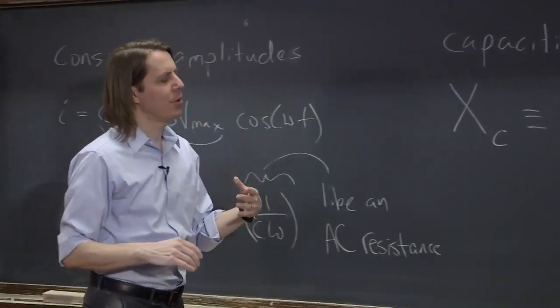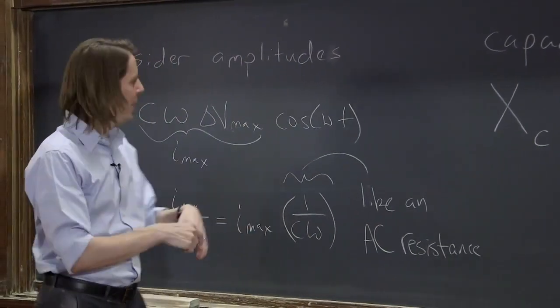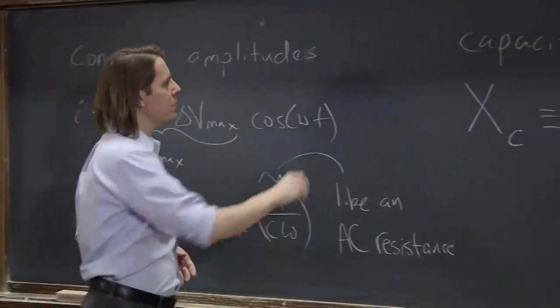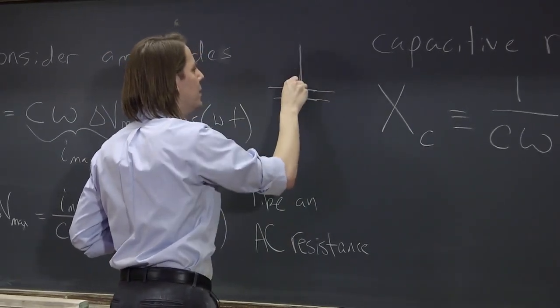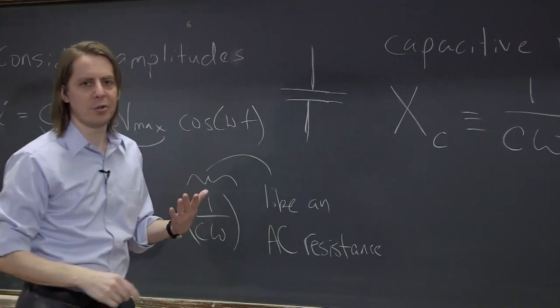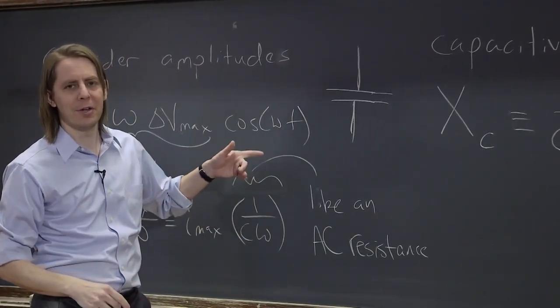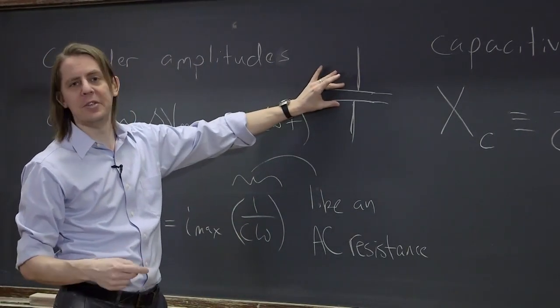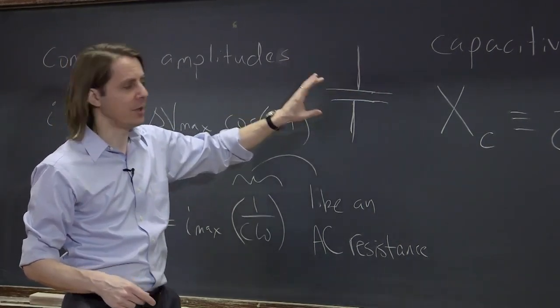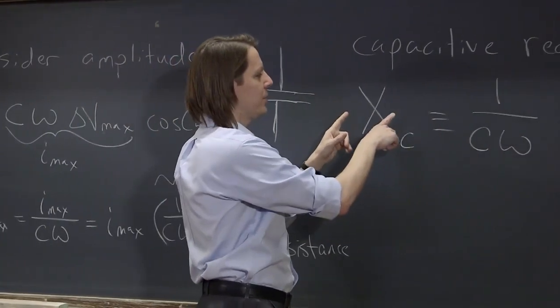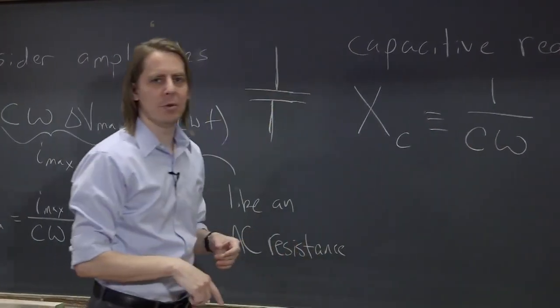you have a capacitor in the circuit here, and you take the frequency essentially to zero, you're talking about going essentially to DC circuits, very slowly varying that frequency. Well, this is an open circuit at DC. There's basically nothing here. So its resistance should go very big. Well, sure enough, the capacitive reactance goes to infinity when you get the frequency really low.